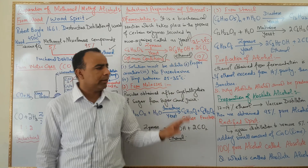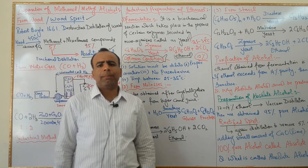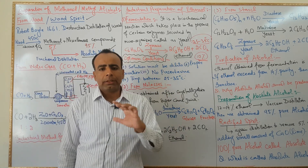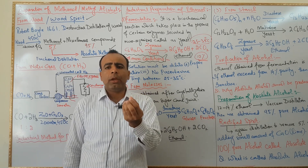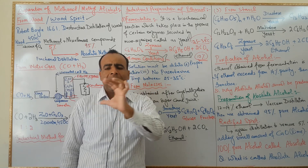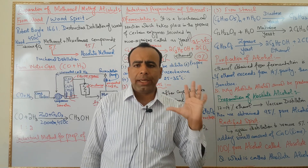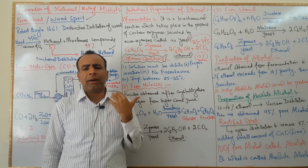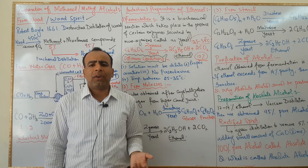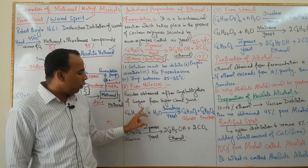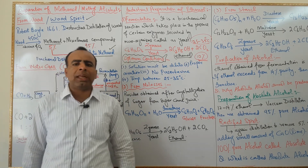Now I am going to tell you the preparation of ethanol from molasses. In simple words, when we prepare sugar from sugarcane juice, a black color residue comes on top — that residue is called molasses. It is the residue obtained after crystallization of sugar from sugarcane juice. The formula of molasses and sucrose is the same: C12H22O11.